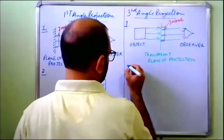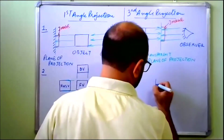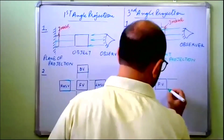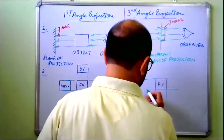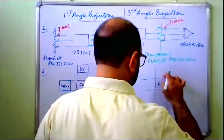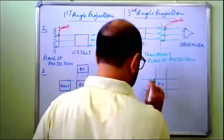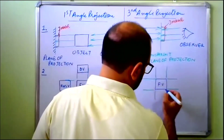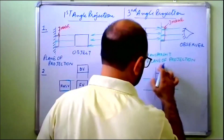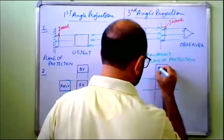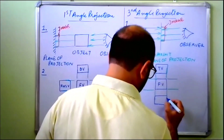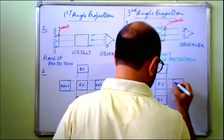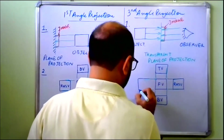In third angle projection, views are drawn in the same direction. The top view is drawn at the top, the bottom view at the bottom, the right-hand side view at the right, and the left-hand side view at the left.